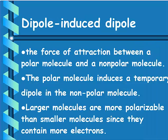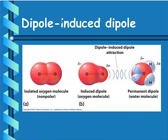A dipole-induced dipole is very similar, except it's the force of attraction between a polar molecule and a nonpolar molecule. The polar molecule, just like the ion, induces a temporary dipole in the nonpolar molecule. Larger molecules with more electrons are more polarizable. For example, when water or any other permanent dipole molecule comes close to oxygen (a nonpolar molecule), the slightly negative oxygen in water repels the electrons in O2, making one side slightly positive and the other slightly negative, which then affects the next neighboring molecule, and so on.